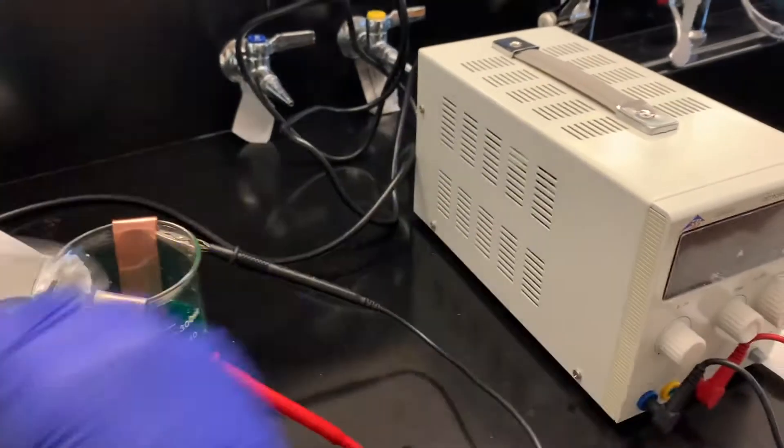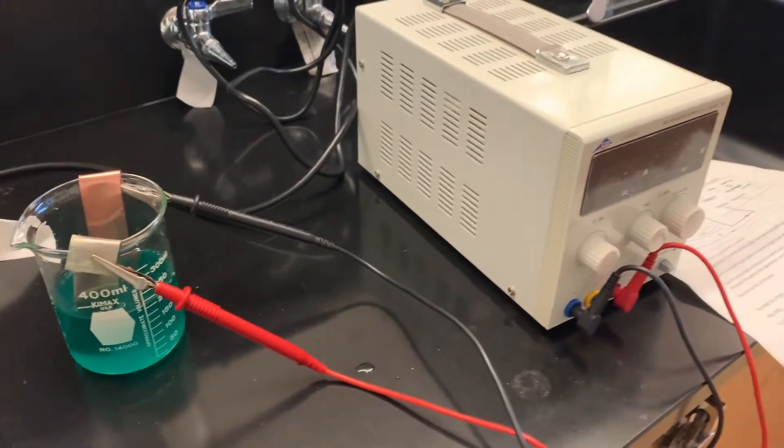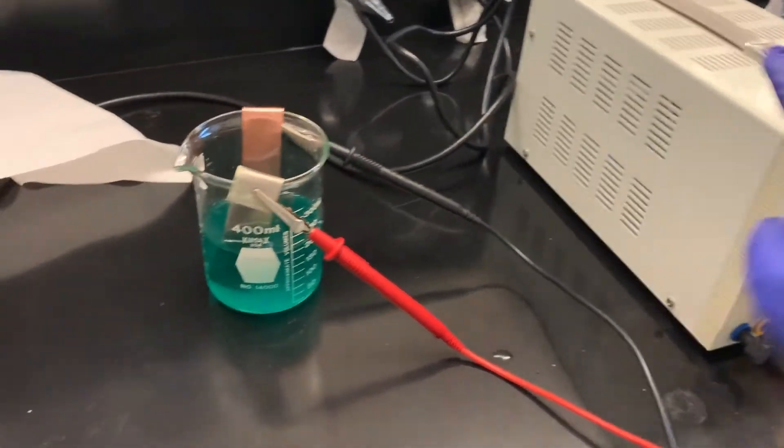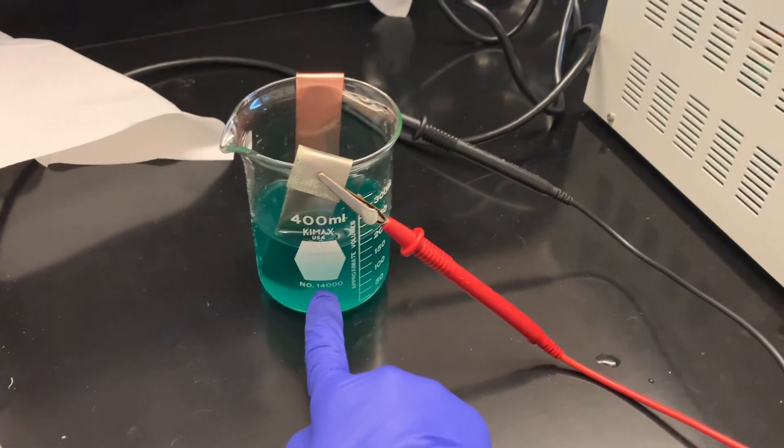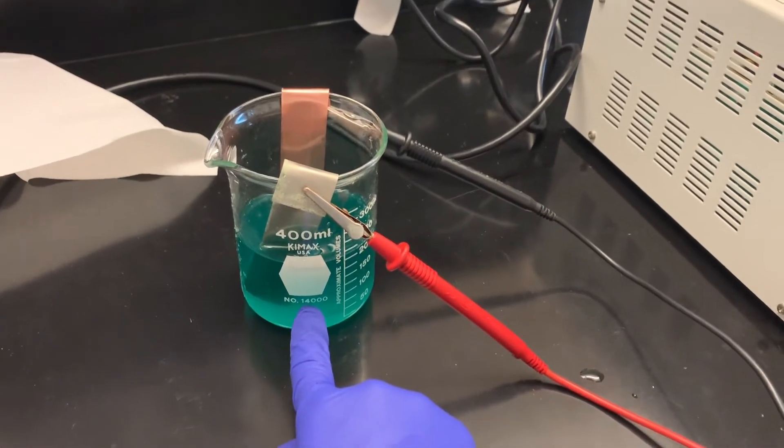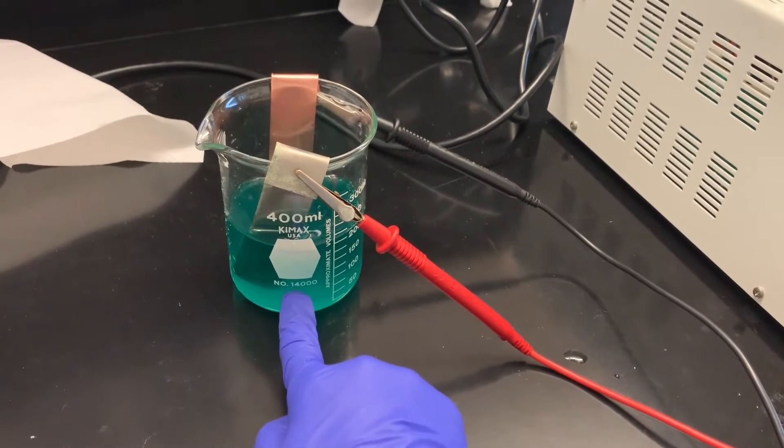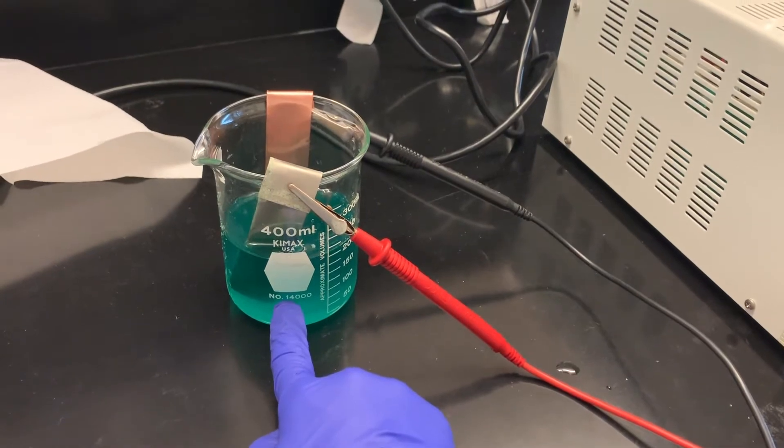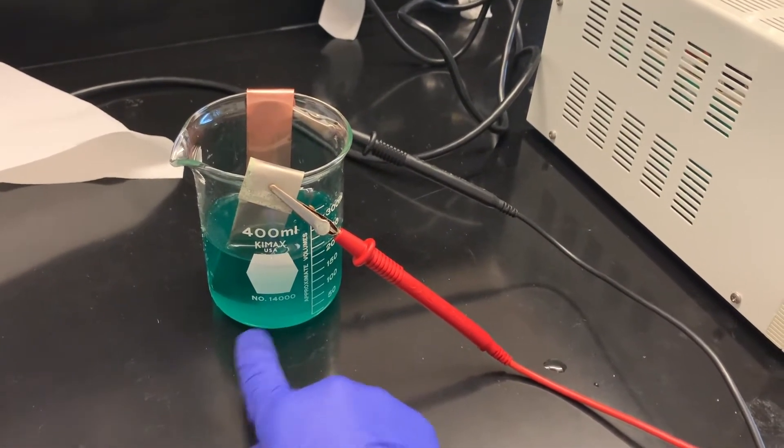I'm setting up my electrolytic cell here. I have a power supply, I haven't turned it on yet, and then I have this green solution. The green is actually the nickel 2 plus making the solution green. This is the important ion that's in this electrolytic solution, nickel 2 plus.